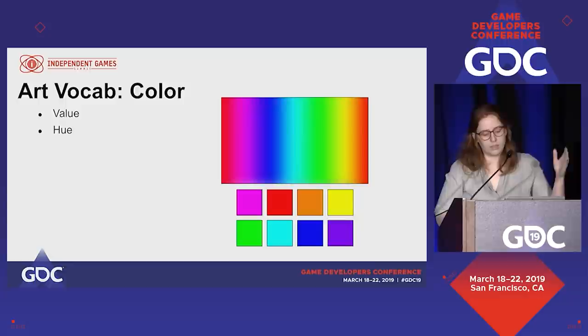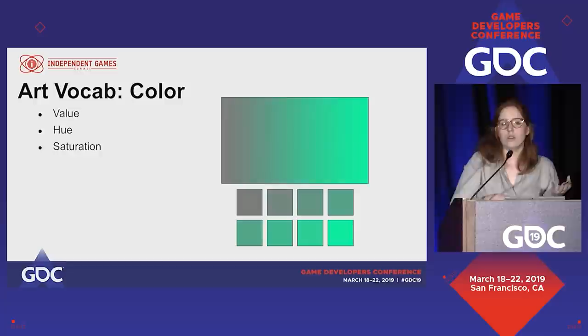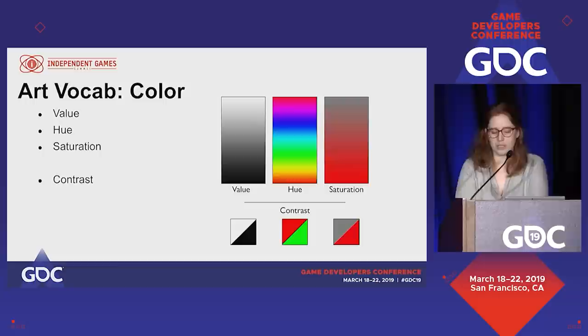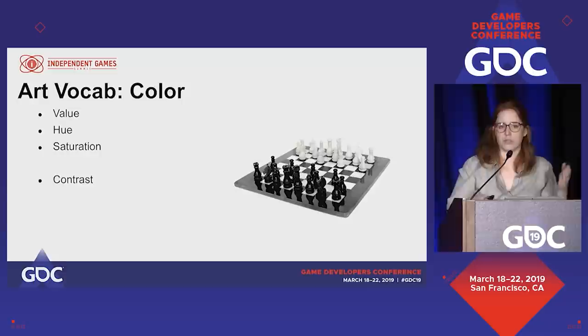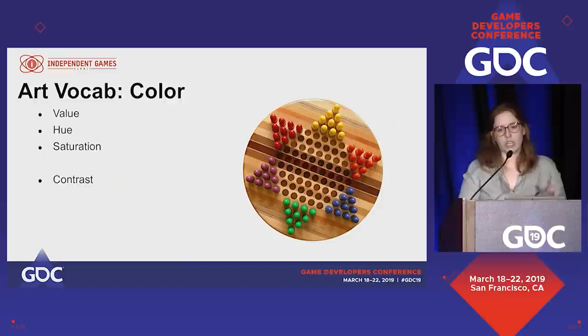Hue is next — ignoring saturation and value, hue is basically color as we learned as kids: the rainbow, red, orange, yellow, green, blue, purple. Saturation is how gray or vibrant something is, regardless of hue and value. Contrast can be between any of these elements. Value contrast is one of the most effective ones, but it can also be a contrast of hues or contrast of saturation. Chess is an example of contrast of value — lightest white versus darkest black. Checkers is contrast of saturation — very vibrant red versus desaturated black. And Chinese checkers is a contrast of hues, where you have only differentiation between hues and not in value or saturation.